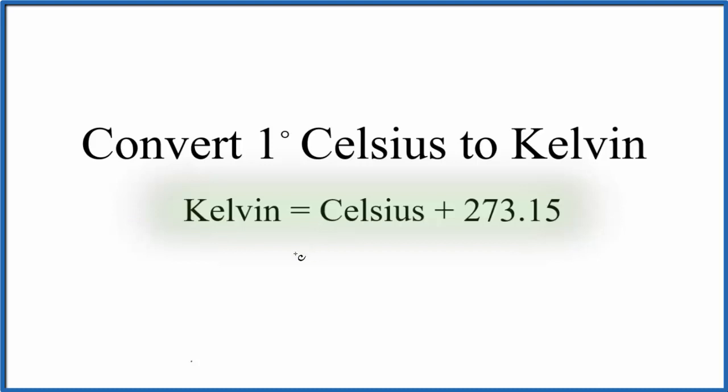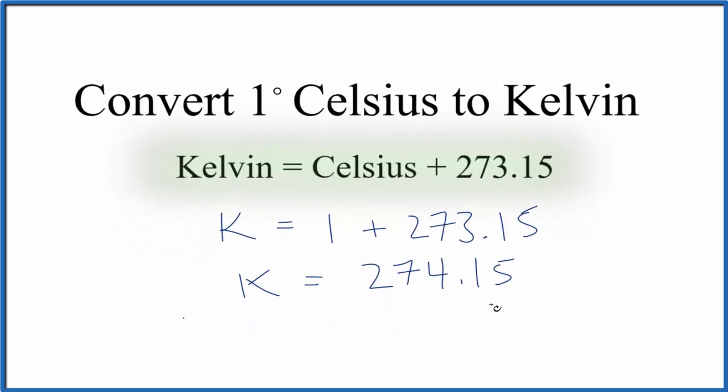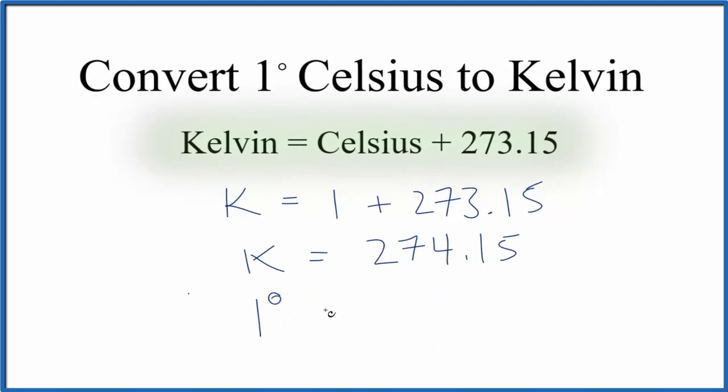We have Kelvin equals one degree Celsius, so we have 1 + 273.15. Kelvin would equal 274.15. So one degree Celsius equals 274.15 Kelvin.